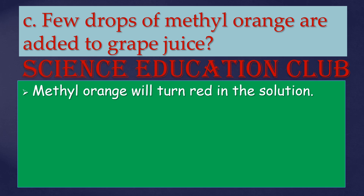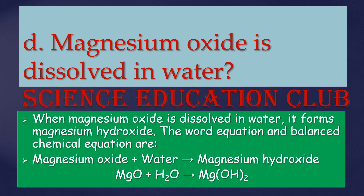When magnesium oxide is dissolved in water, it forms magnesium hydroxide. The word equation and balanced chemical equation are: magnesium oxide plus water gives magnesium hydroxide. MgO + H₂O → Mg(OH)₂.